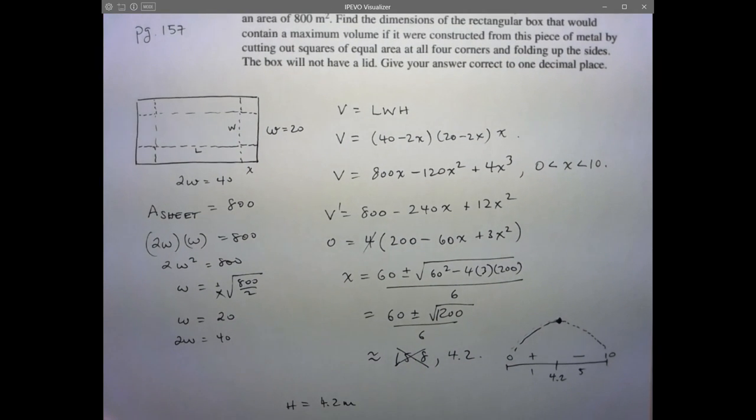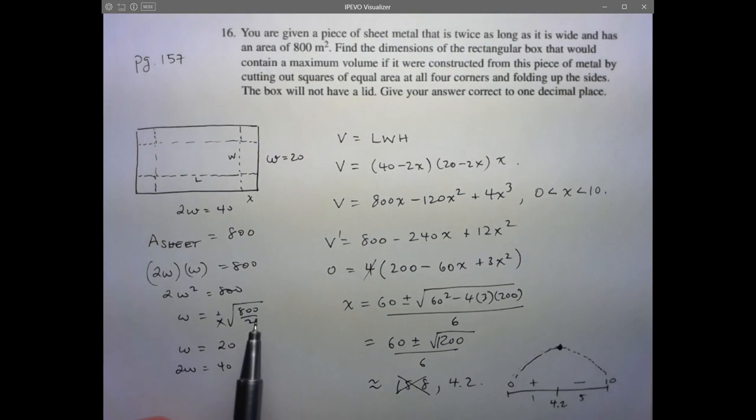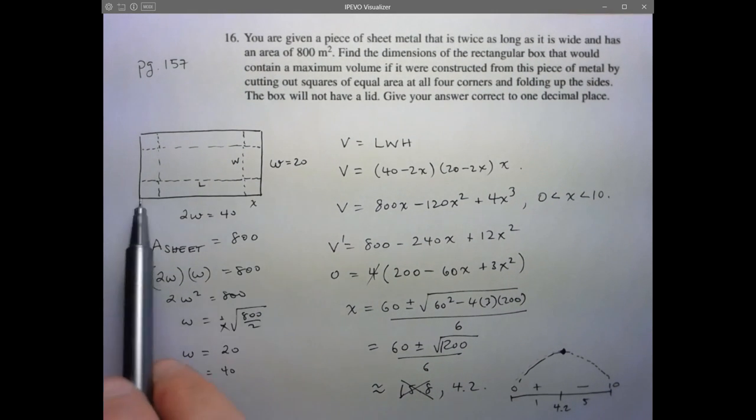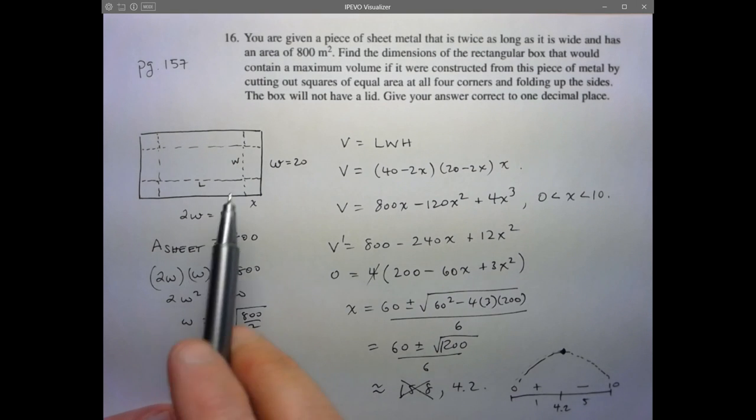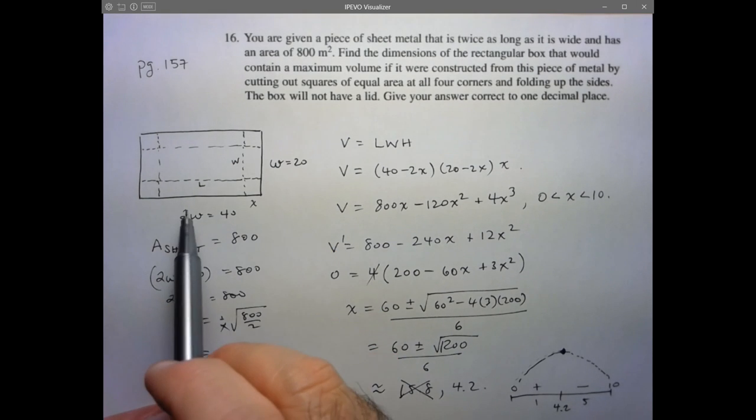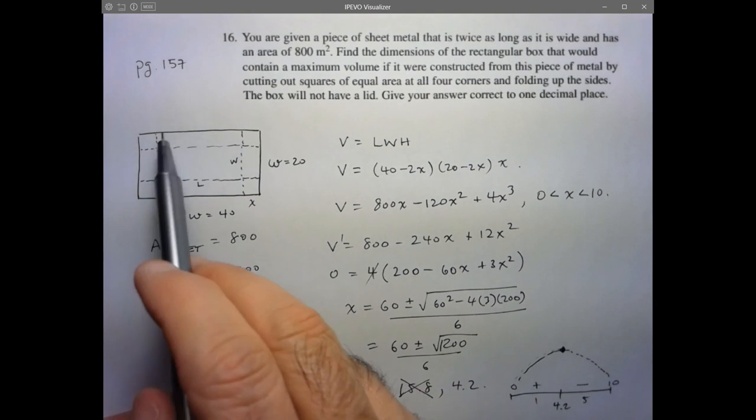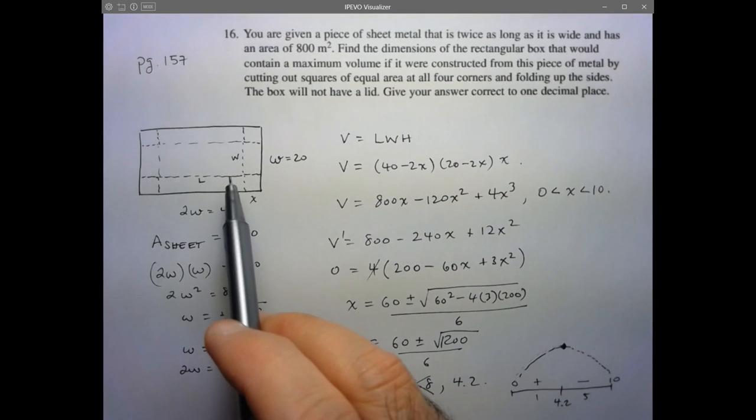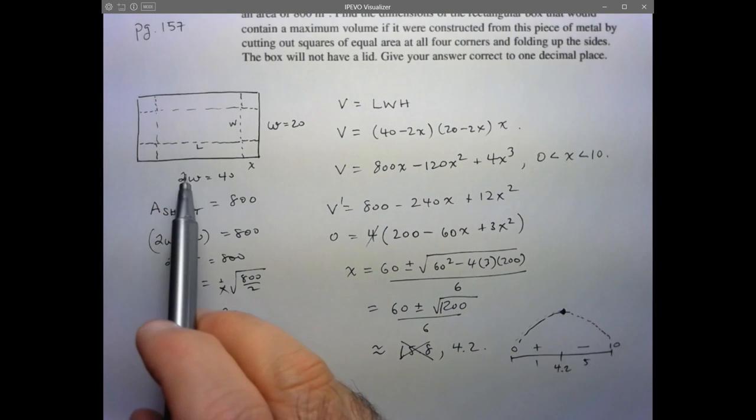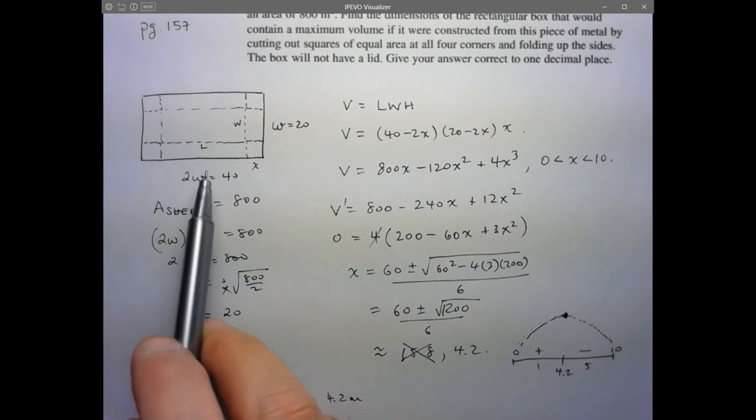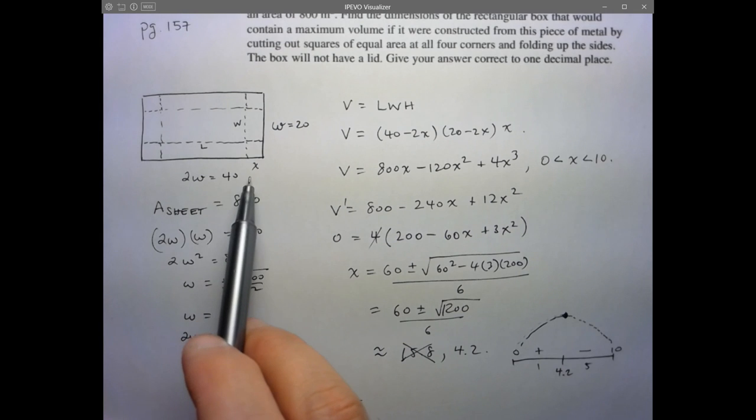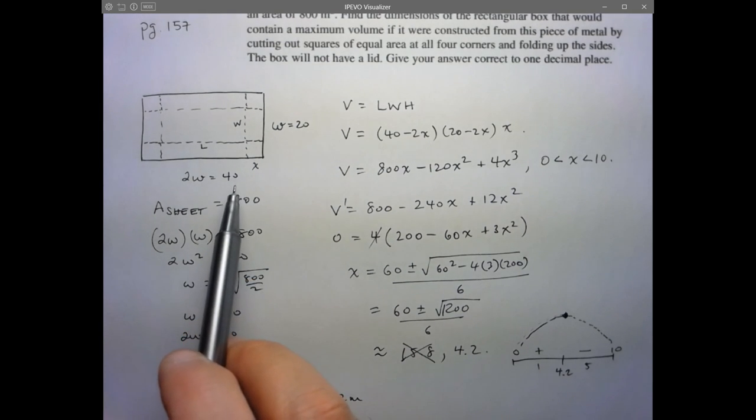So this was actually very similar to a problem we'd already seen before. The difference here was we had to do a little bit of work. They didn't give us the length and width of the sheet that's being used directly. However, knowing that the length was twice the width, and knowing the full area of the whole sheet of metal, we were able to determine w and hence 2w. And then from there, we were able to solve the problem using this x, the amount that we're cutting off, as our input variable. That's it for this one. Thank you.